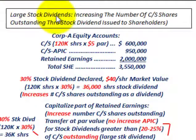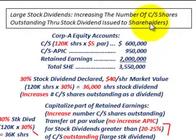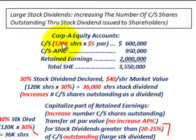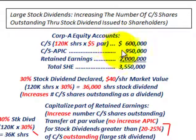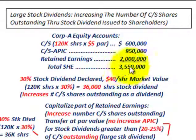What we're going to be going over here is a large stock dividend — that's where you increase the number of common stock shares outstanding through a stock dividend issued to shareholders. Corporation A has these equity accounts: common stock with 120,000 shares outstanding at $5 par value per share for $600,000, additional paid-in capital to common stock at $950,000, and retained earnings at $2 million. Total shareholders' equity is $3,550,000.